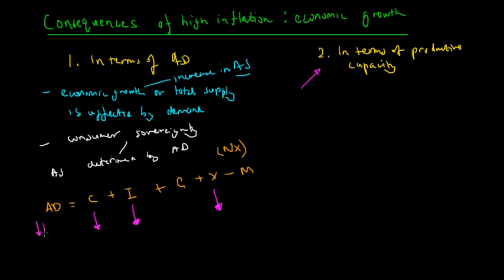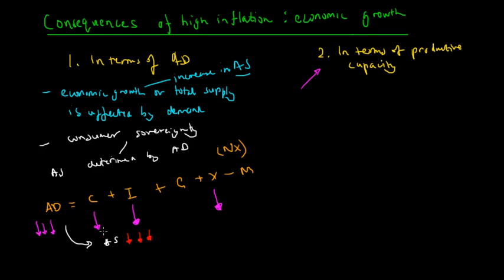Overall, we can see three arrows showing that aggregate demand declines threefold. Because aggregate demand decreases, producers respond by producing less — so aggregate supply would also decrease. Since economic growth is a function of an increase in aggregate supply, economic growth will also decline in times of high inflation.